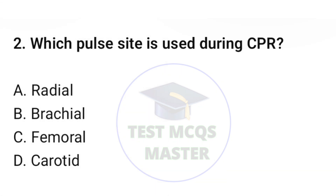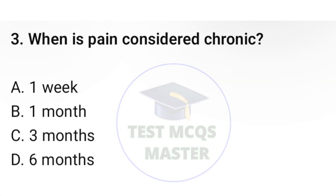Question number two: Which pulse site is used during CPR? The correct option is D: carotid. Question number three: When is pain considered chronic? The correct option is C: three months.